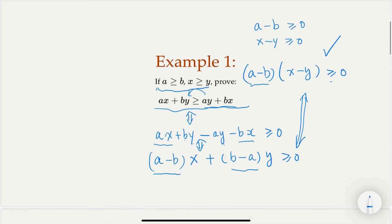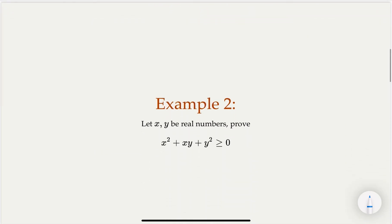Let's look at the second example. Here, x and y are real numbers, and we want to prove that x² + xy + y² ≥ 0. This is almost (x + y)², but instead of 2xy it has just 1xy. So how do we prove that? We probably want to use the fact that any quantity, when squared, is non-negative. The trick is to complete the square.